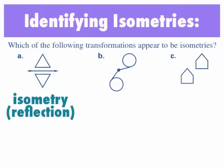In B, the two circles again appear to be congruent, so we would say that this would be an isometry.